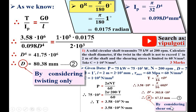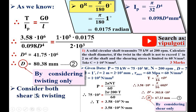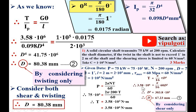Comparing Equation 1 (D = 67.23 mm from shear stress) and Equation 2 (D = 80.38 mm from twist), the shaft must be safe under both conditions. Therefore, select the larger value. Considering both shear and twisting, the final shaft diameter D = 80.38 mm.